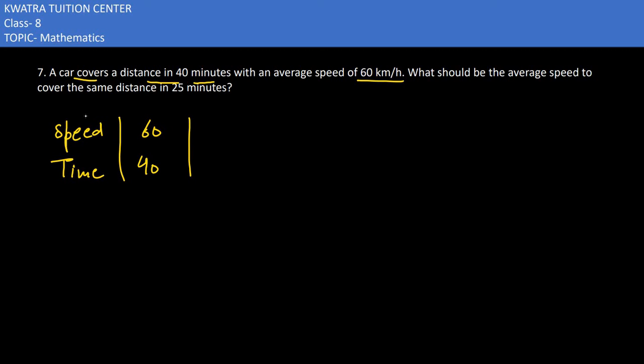On the other side we have 25 minutes. We have to take X2 from one way because we don't know the speed in the second situation. So we take X2. X1 is given as 60, Y1 is given as 40, and Y2 is given as 25.